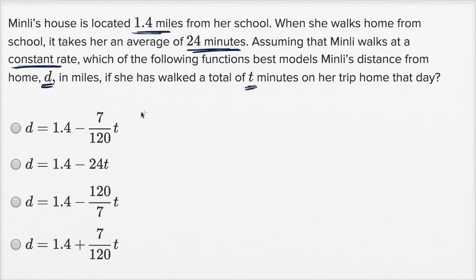So let's just think about her rate, her constant rate that they're talking about. The rate that Minley walks, well, she covers 1.4 miles. She covers 1.4 miles in 24 minutes. Well, this isn't a pretty fraction with a decimal in the numerator, so let's multiply the numerator and the denominator by 10 so that we get rid of this decimal. So that's going to be equal to 14 over 240 miles per minute.